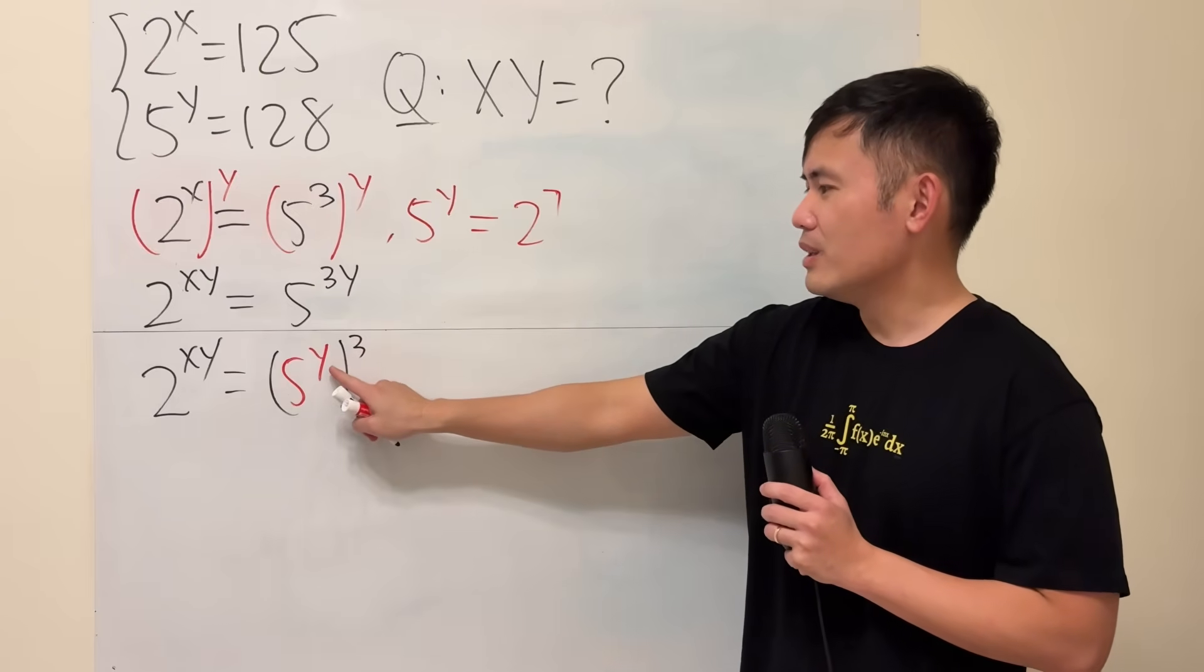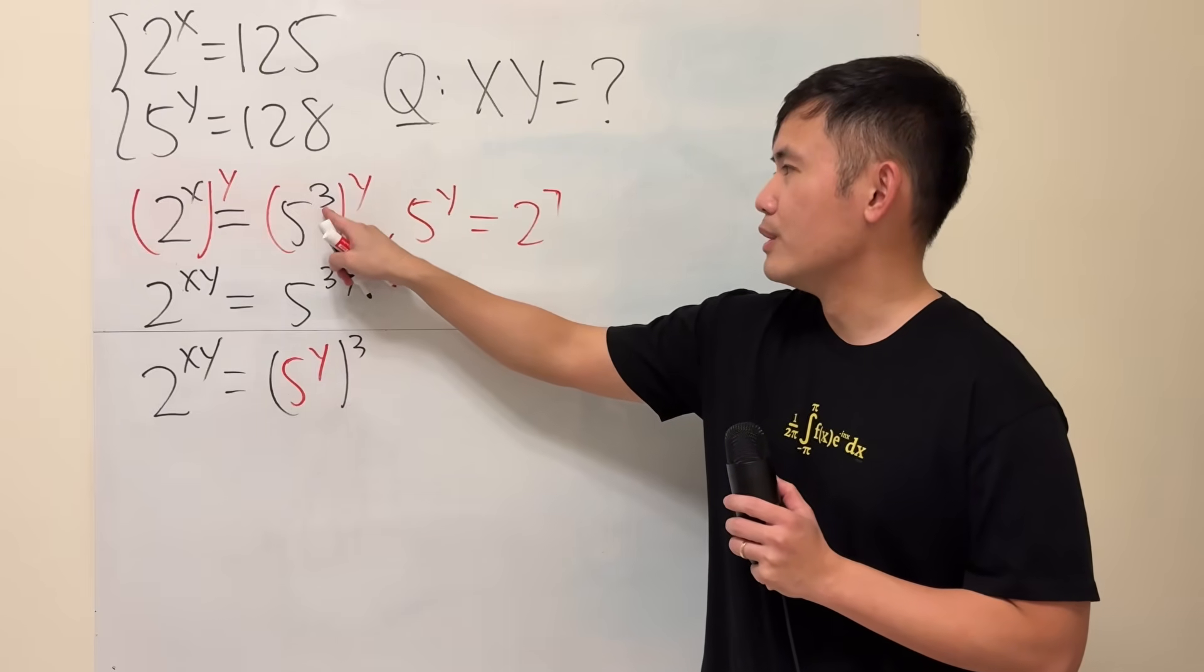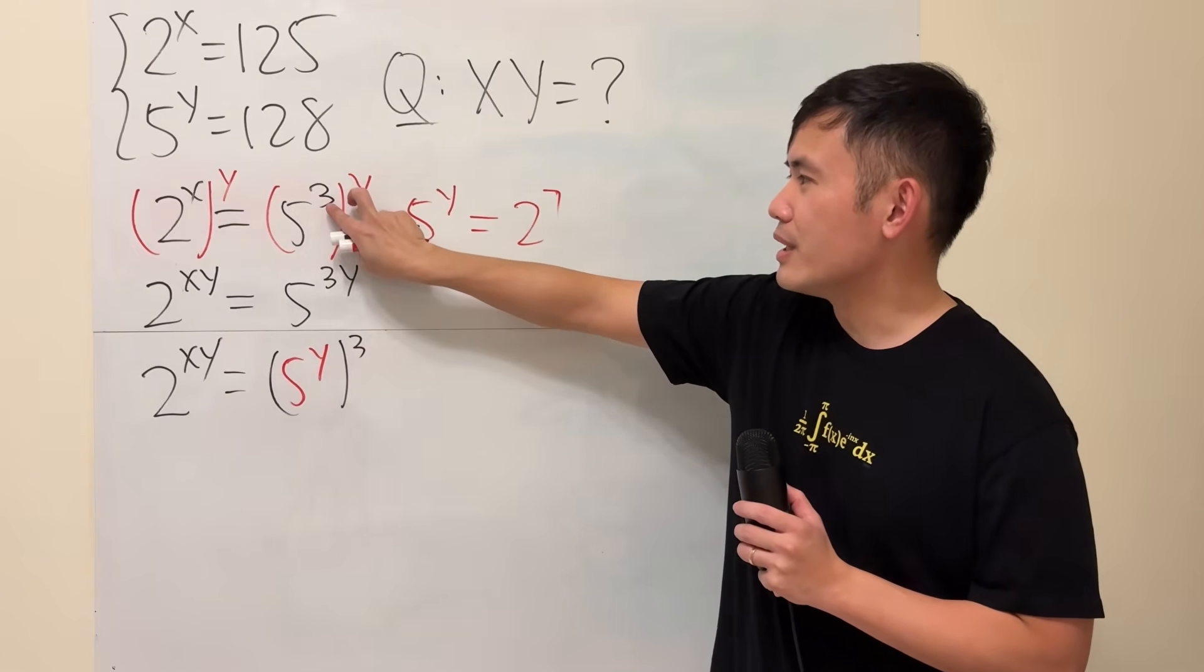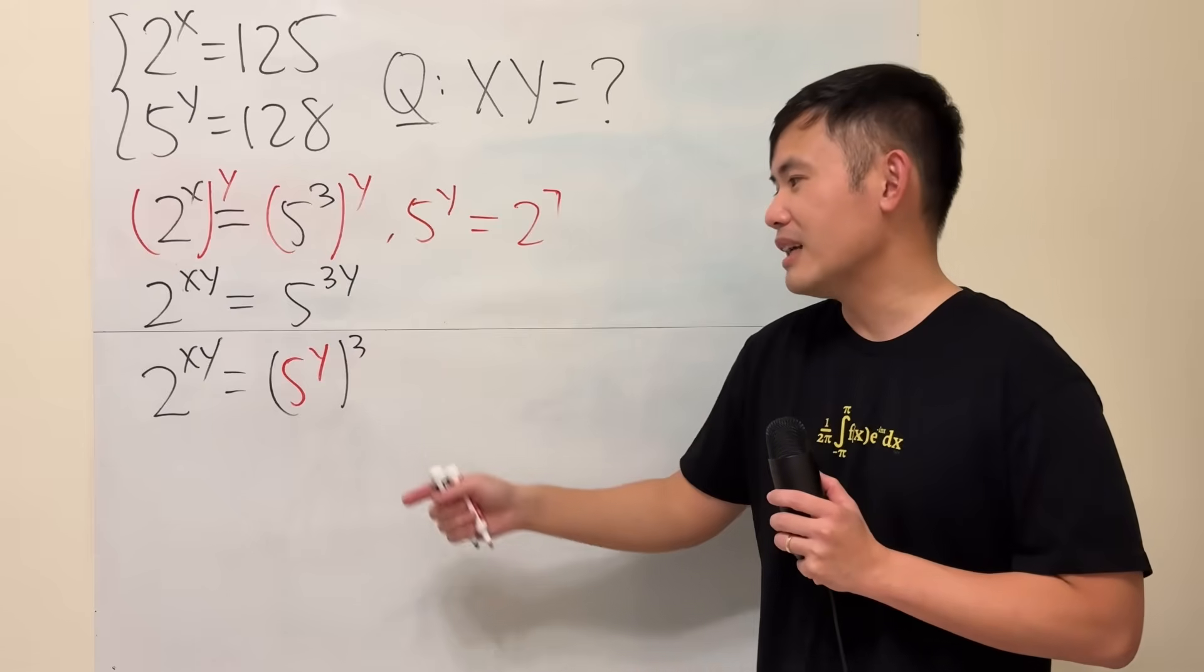Because when you have this, again, you multiply the exponents, you get 3y, which is the same as this right here, right? You multiply the exponent, you get 3y. So in fact, you can switch the 3 and the y from here to here. It's actually the same thing. I think it's pretty cool.